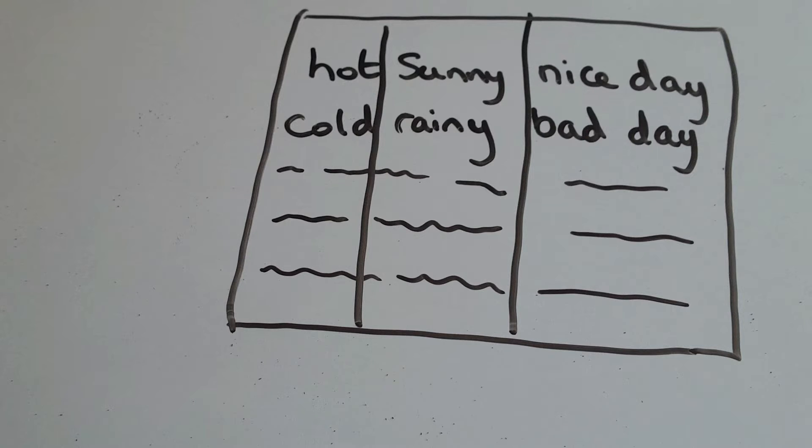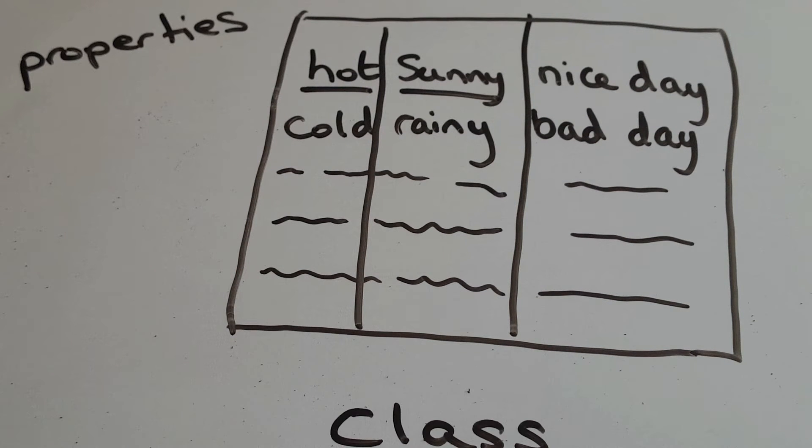So if we collected a record of the sky and temperature every day we would start to build up our data set. So let's change our language and say that temperature and sky are properties of a day and what type of day it is is a class. So if someone doesn't tell us the type of day we can look at the sky and the temperature and judging from our past experiences we can tell if it's a nice day or not.